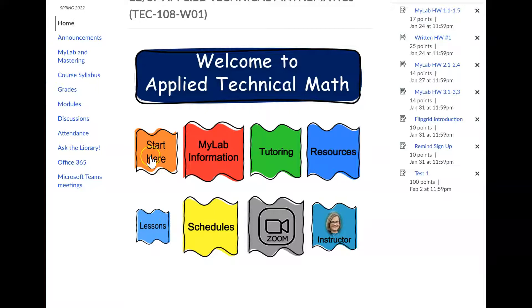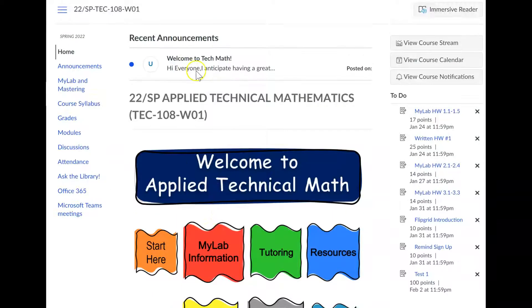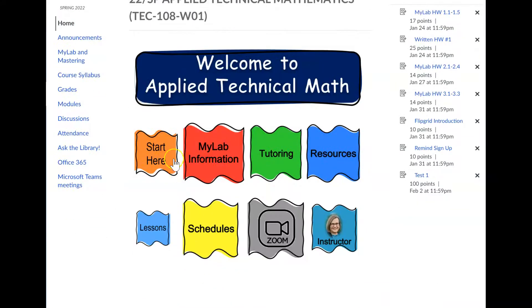And you can find everything that you need to find for the class with these buttons and also then this menu over on the side. Right here you can see that I have an open announcement, a welcome announcement for you to read. And then various things that you can view from the course menu and then the other buttons that I've added.